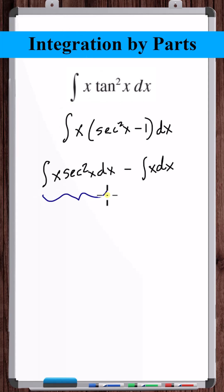So we're evaluating this integral with integration by parts. We'll say that u is equal to x and dv is equal to secant squared x dx. Therefore, du is equal to dx and v is equal to tangent x.